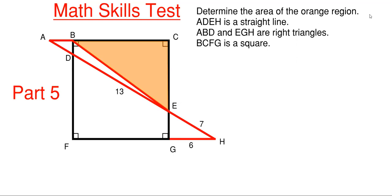So we are tasked with determining this orange region. Well, this orange region is a right triangle, so we need to determine side BC and side CE in order to get the area for this right triangle.